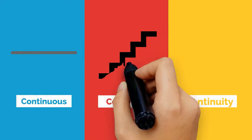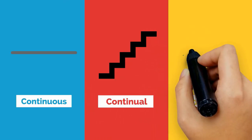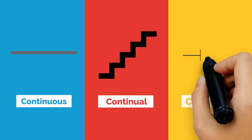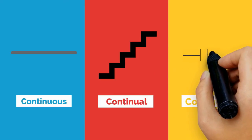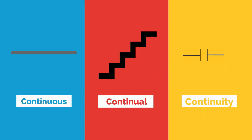Continuous is a continuous line between two points. Continual is a step-by-step movement from one point to another. Continuity has a break and starts again before reaching the end point. You should now have a clear understanding of the difference between continuous, continual, and continuity.